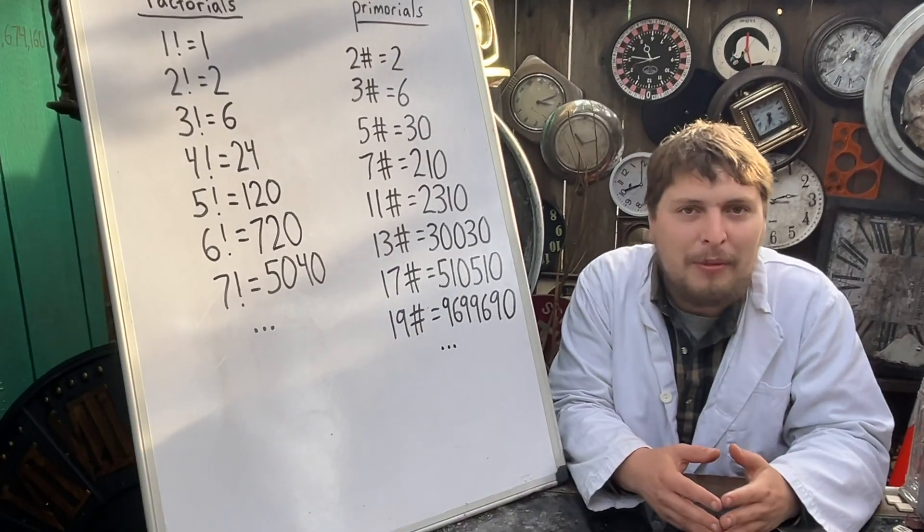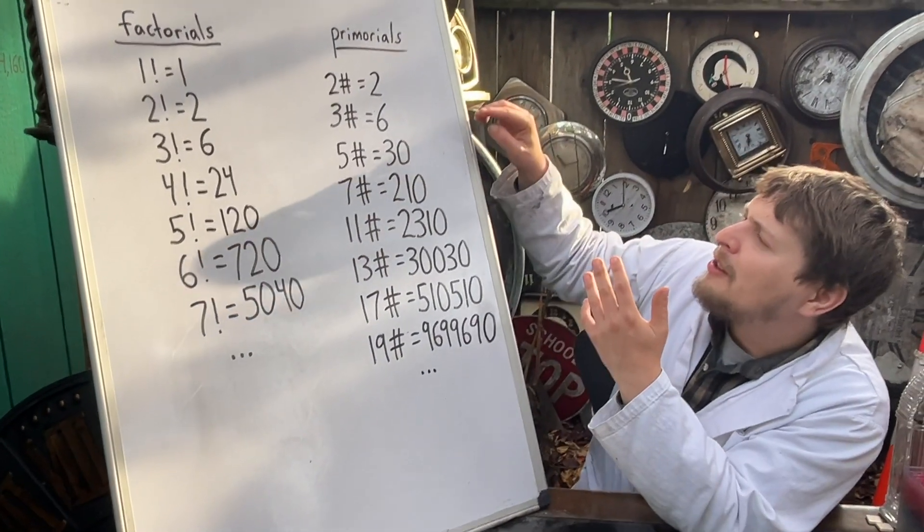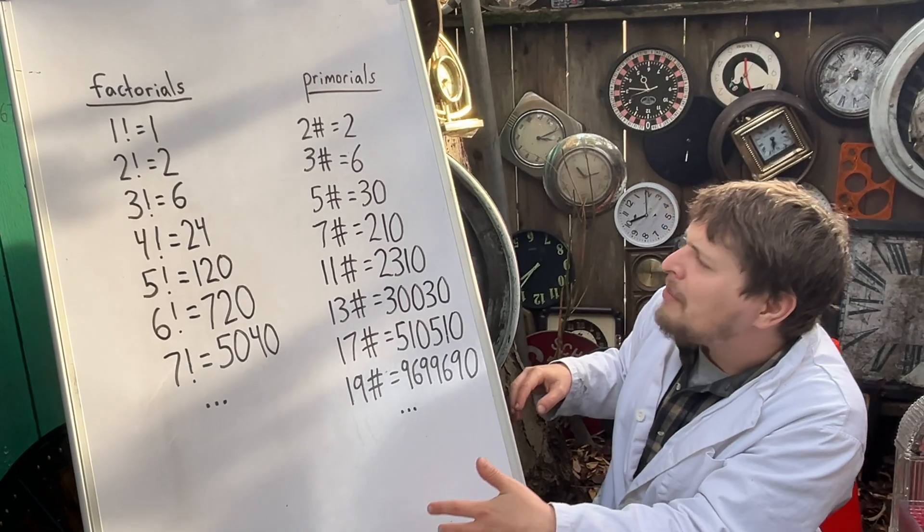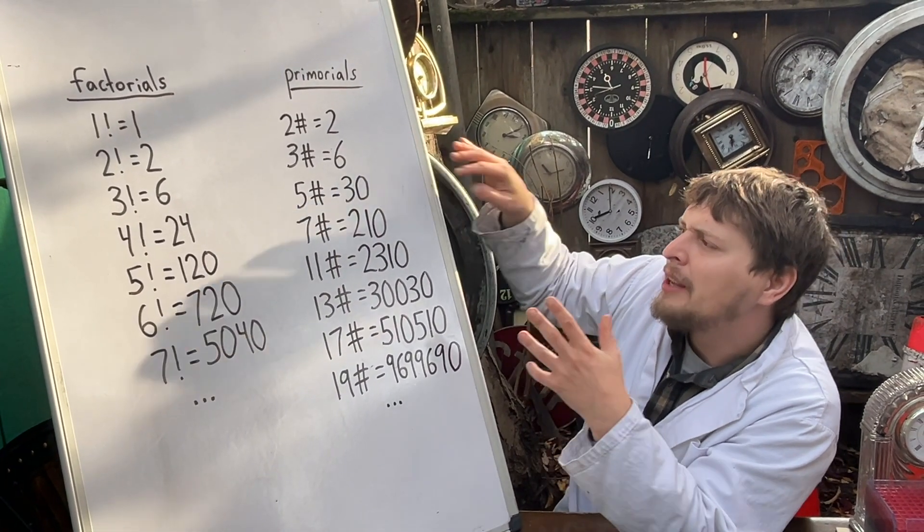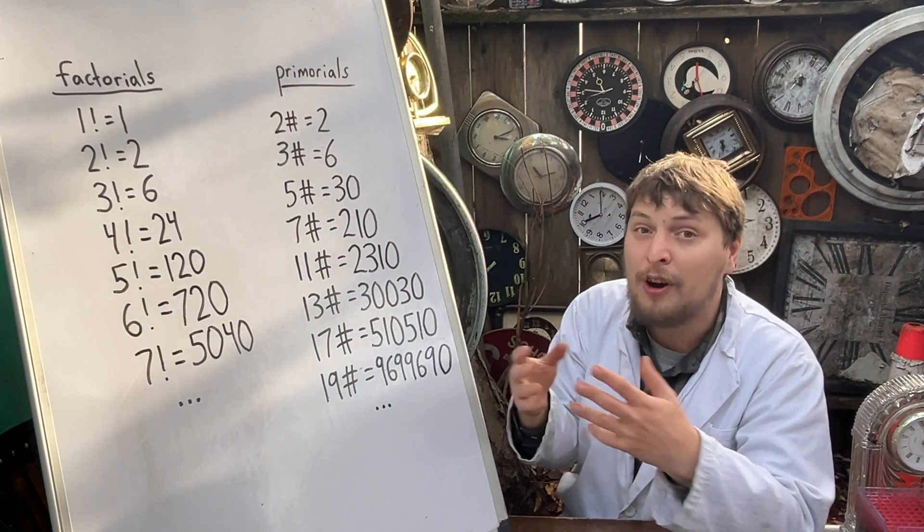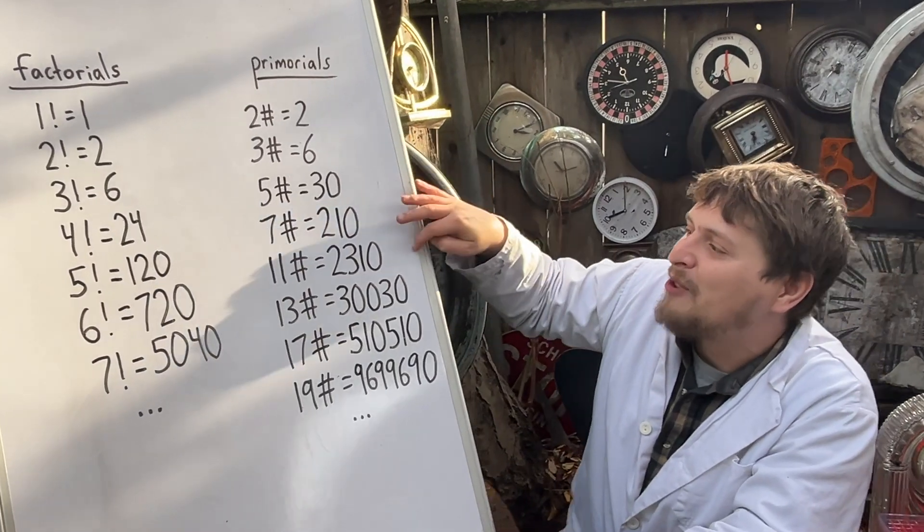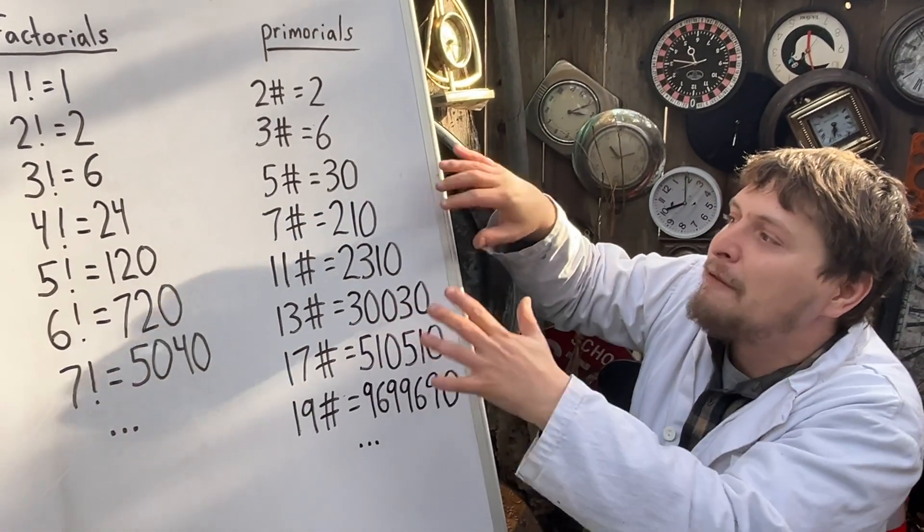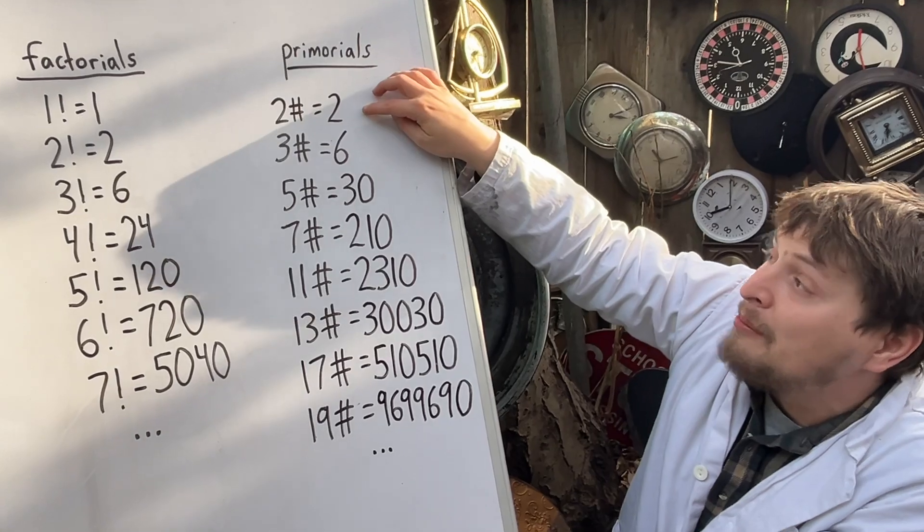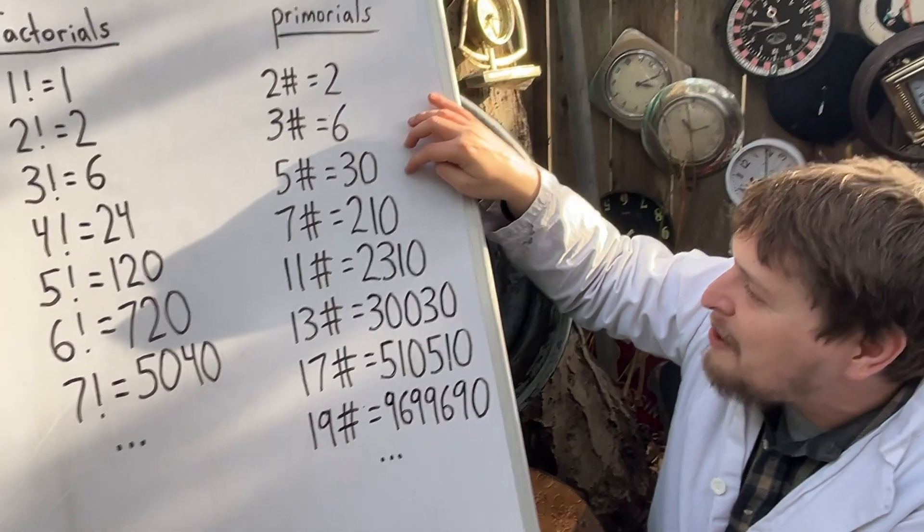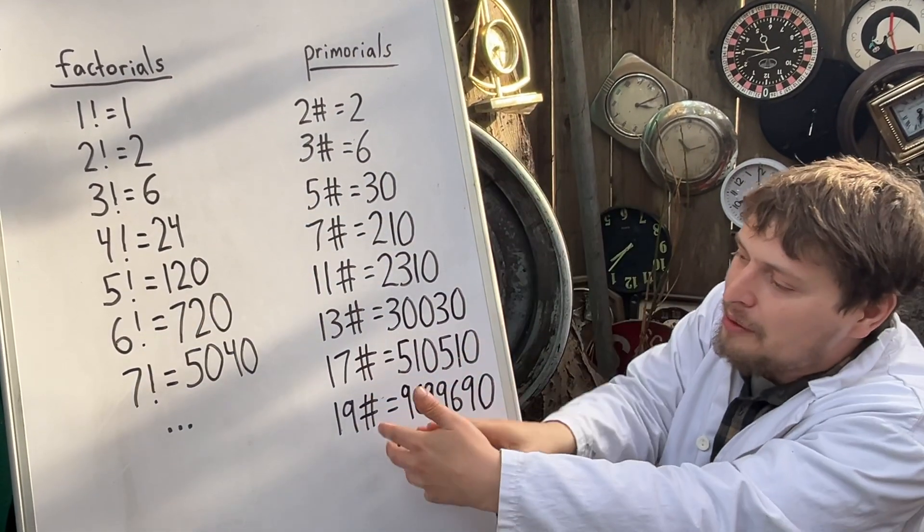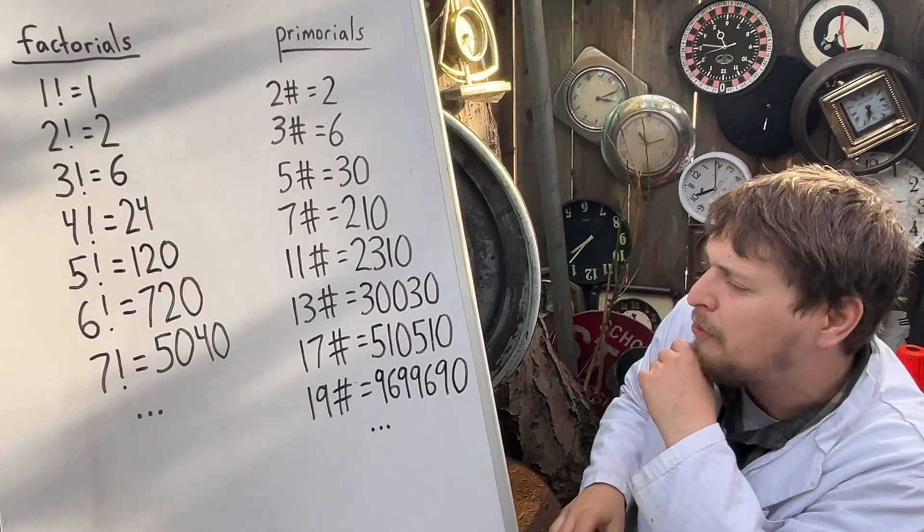But then when I thought about it for a moment, I realized, well, would it end in ever more than one zero? Because to get our first zero in base 10, for example, we need to have a 2 and a 5 in our prime factorization. And as we go up primorials, we're only multiplying different primes, and none of those primes by definition could be another multiple of 2 or of 5. So we're never going to contribute another factor of 2 or 5 into the prime factorization of any further primorial.